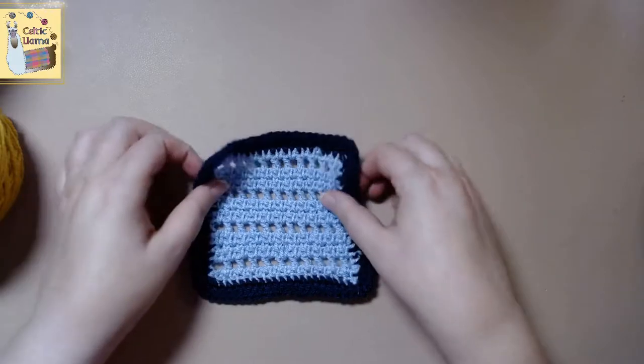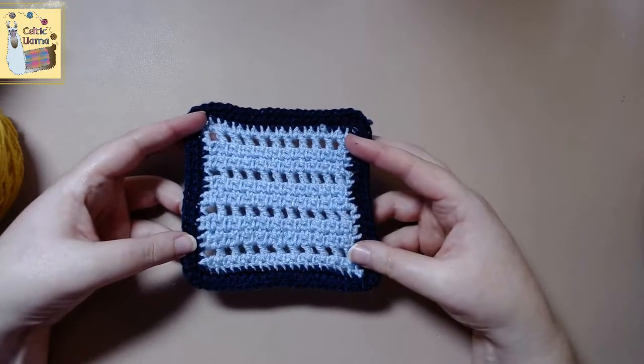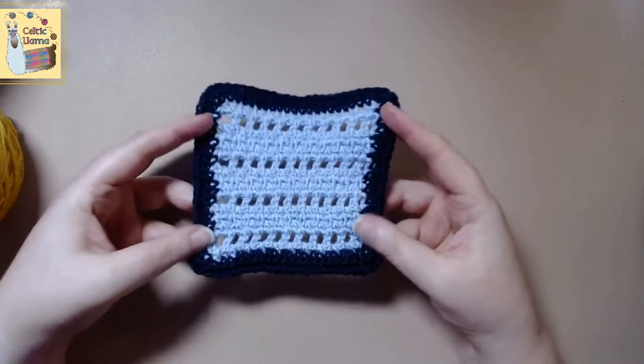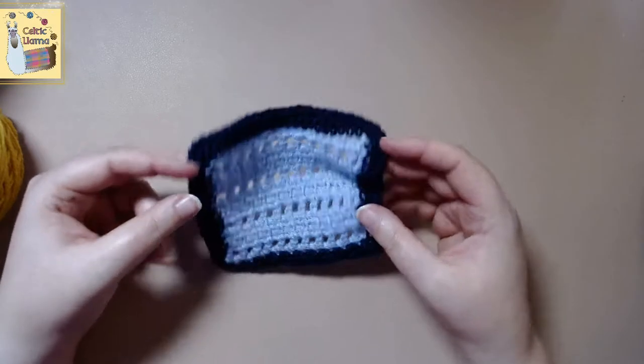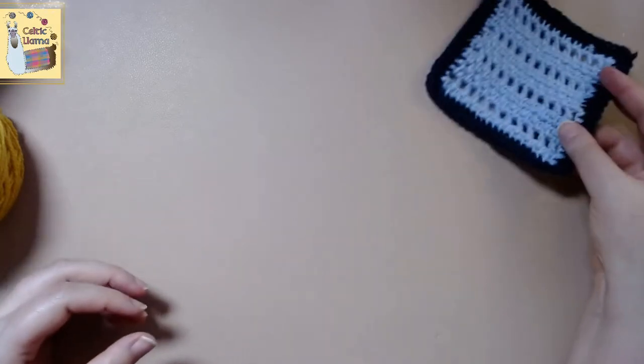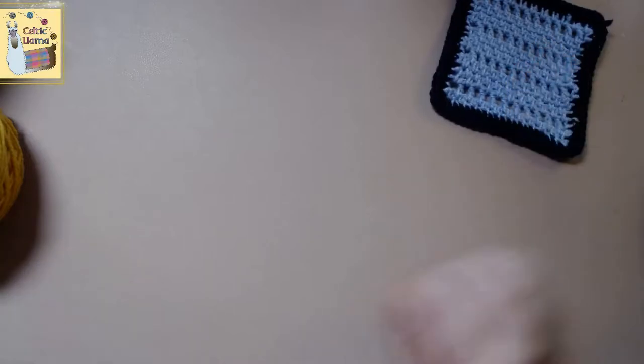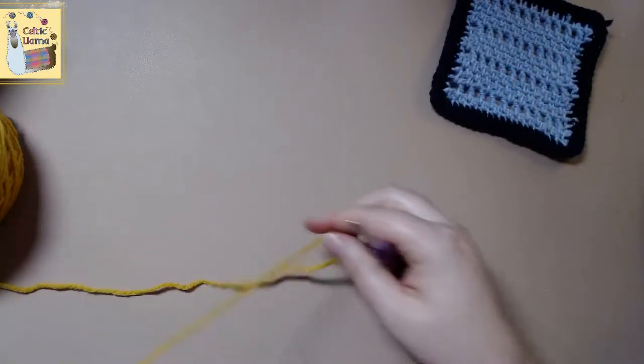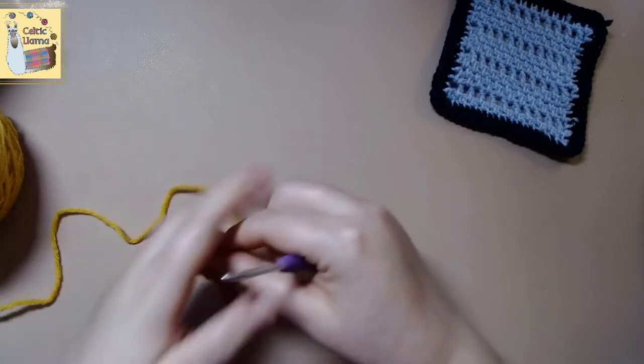Welcome to the Celtic Llama. In today's tutorial I'll be showing you how to do the eyelet rose crochet pattern. You will need to know how to do a single crochet and a double crochet. If you need help with those stitches you can look down in the description below for links on other videos on how to do that.